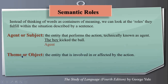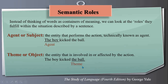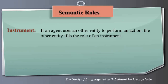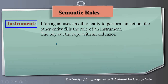Another semantic role is theme or object — the entity that is involved in or affected by the action. In 'The boy kicked the ball,' the ball is the object or theme, the entity on which the action takes place. There is also the instrument role: if an agent uses another entity to perform an action, that entity fills the role of instrument. For example, in 'The boy cut the rope with an old razor,' the old razor plays the role of instrument.